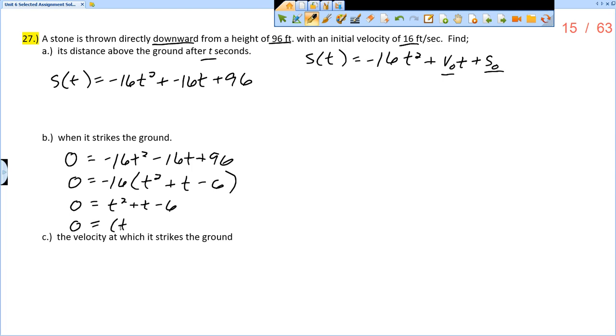And so I can factor that, and I get t plus 3 times t minus 2. And so that means that t would equal negative 3 or positive 2.